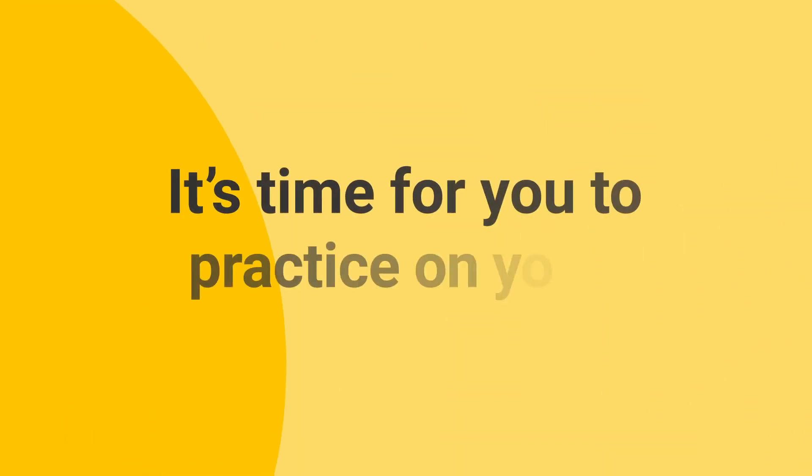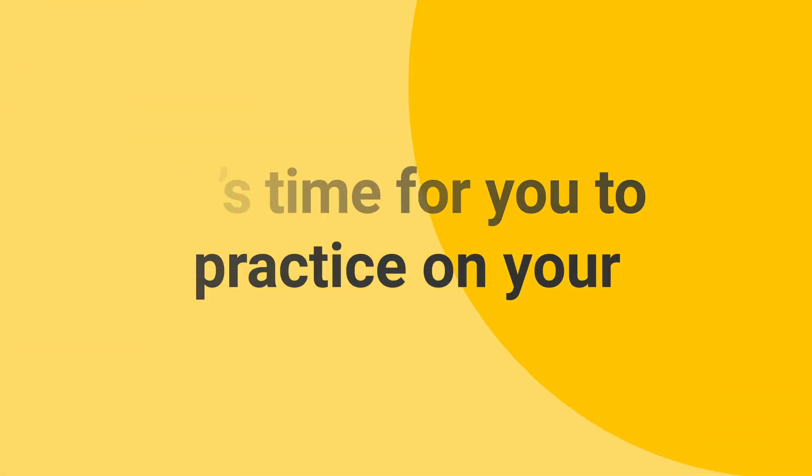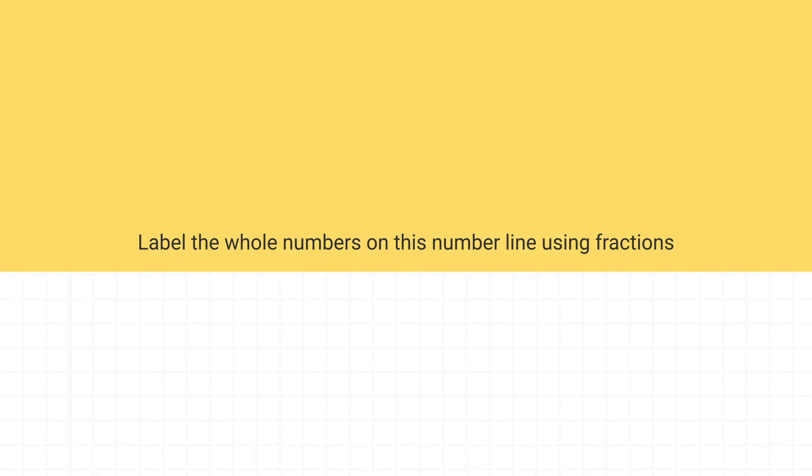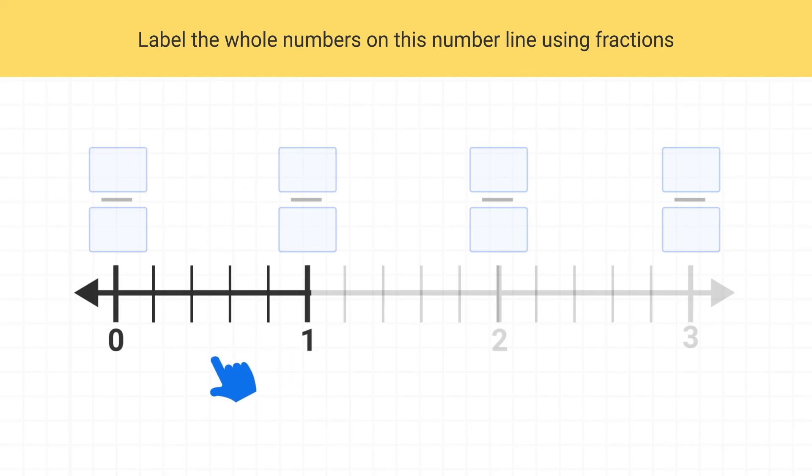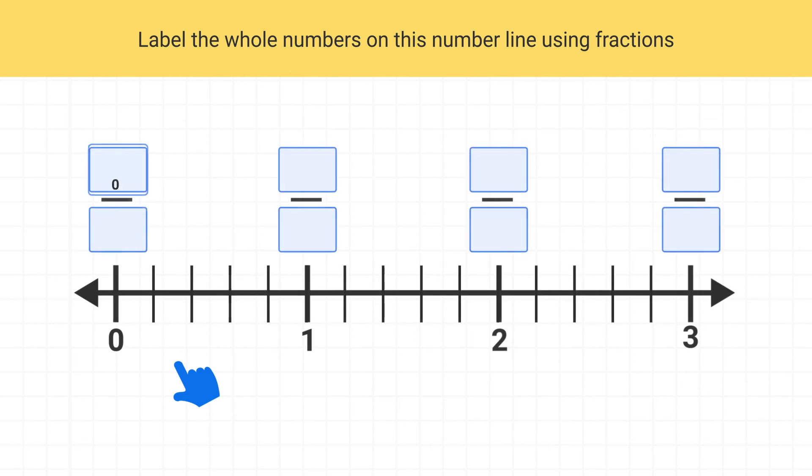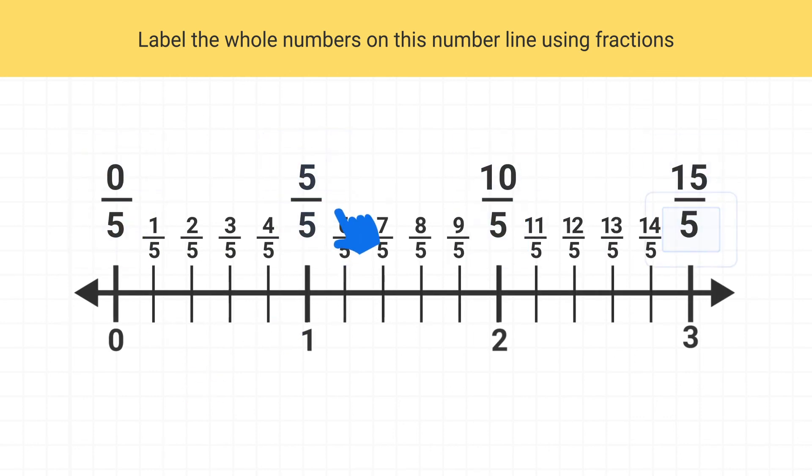Now it's time for you to practice on your own. Label the whole numbers on this number line using fractions. First, you see each whole is split into 5 pieces, so each of these dashes is 1 fifth. Knowing this, we can go ahead and label. We get 1 whole is 5 fifths, 2 wholes is 10 fifths, and 3 wholes is 15 fifths.